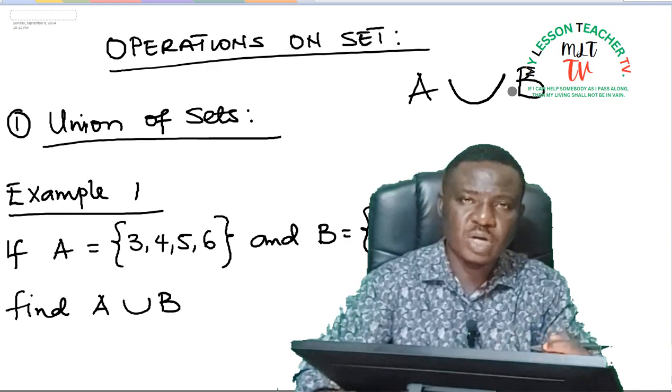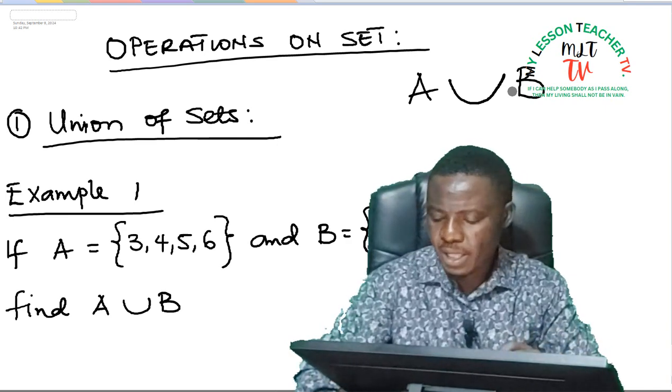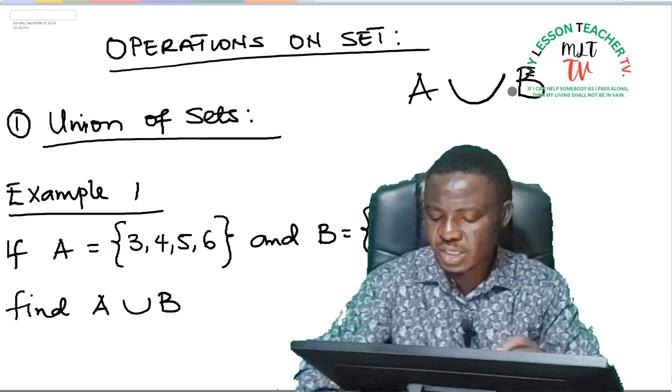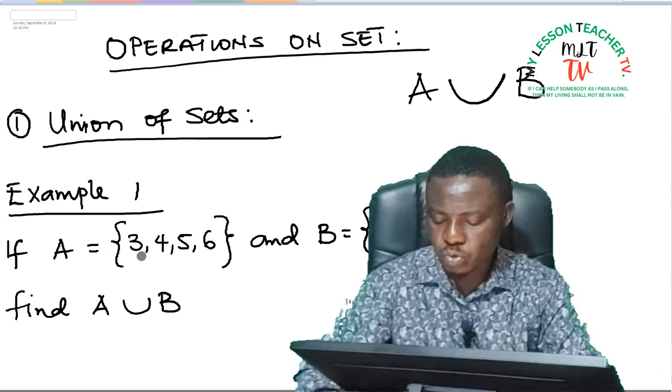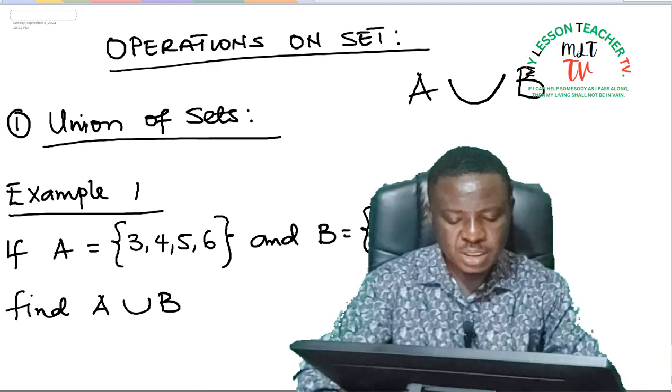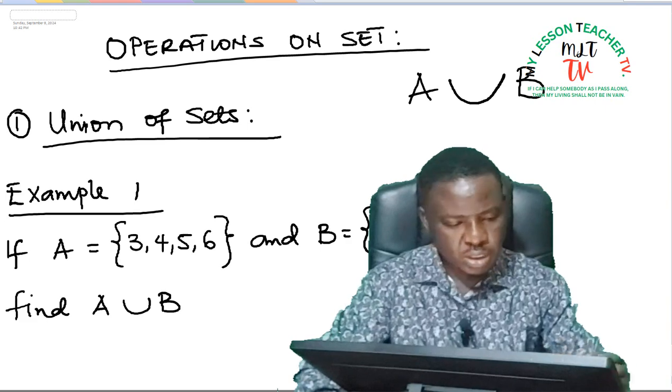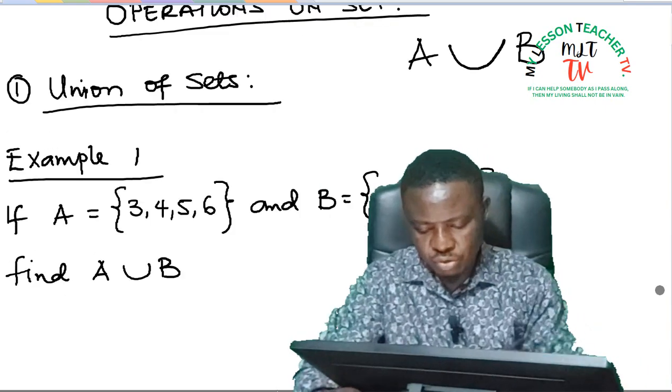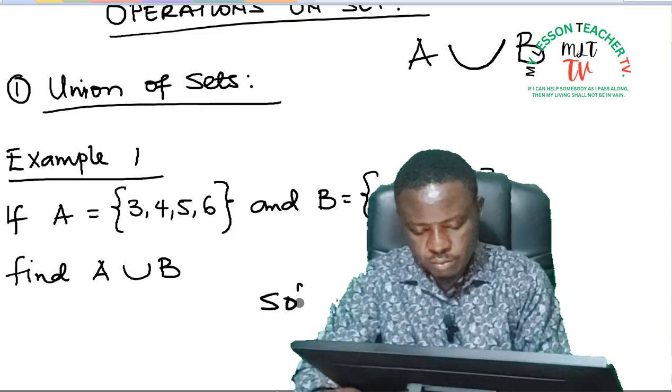So we shall be taking some examples to drive home our point. Example 1 says: if set A is equal to {3, 4, 5, 6} and set B is made up of element {3, 5, 7, 9, 11}, now we should find A union B.